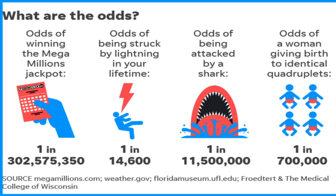As you can see here, here are some examples of odds — for example, the Mega Millions at one in 302 million, the odds of being struck by lightning, the odds of being attacked by a shark, and of course the odds of a woman giving birth to four identical children.